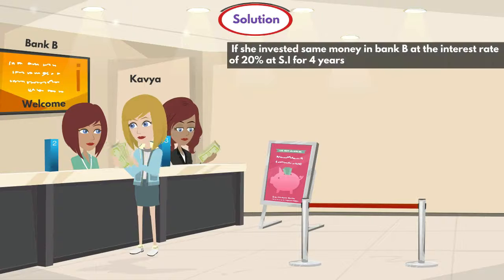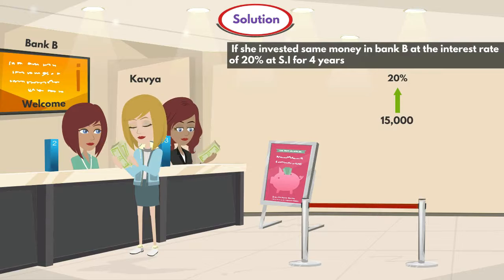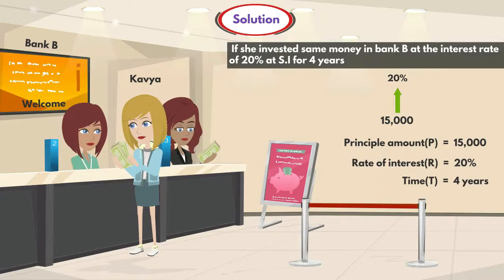In the next statement, she invested the same money in bank B at the interest rate of 20% at simple interest for 4 years. Here the principal amount P is 15,000 rupees, rate of interest R is 20%, and time T is 4 years.